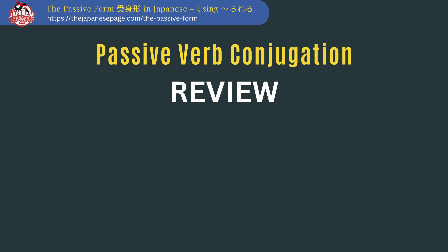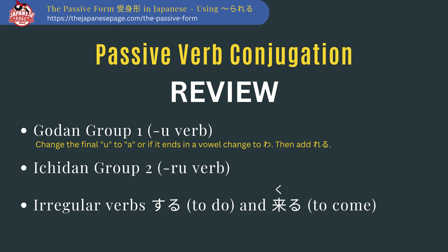To review the conjugations: for godan group 1 verbs, change the final u to an a — or if it ends in a vowel, change it to wa — then add reru. For ichidan group 2 verbs, remove the final ru and add rareru. For the irregular verbs, suru becomes sareru and kuru becomes korareru.